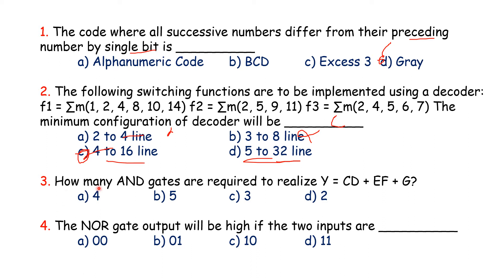The next question: how many AND gates are required to realize y = cd + cf + g? Two AND gates are required. Option D is the correct answer.